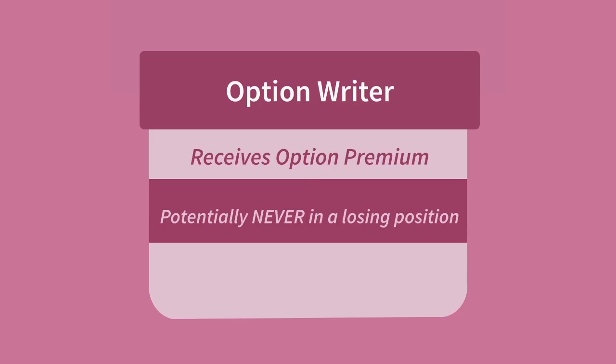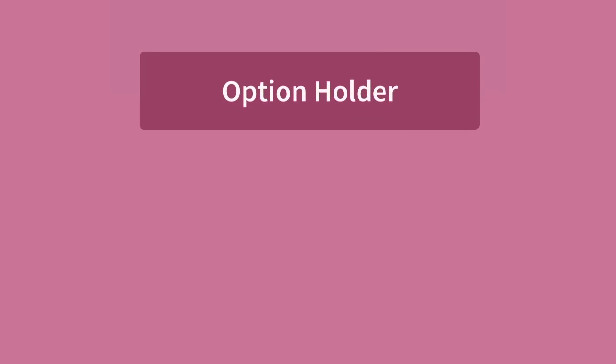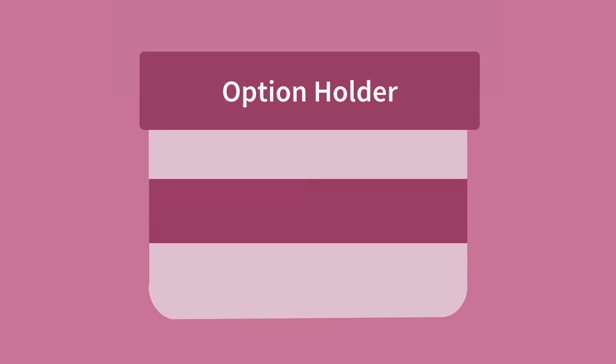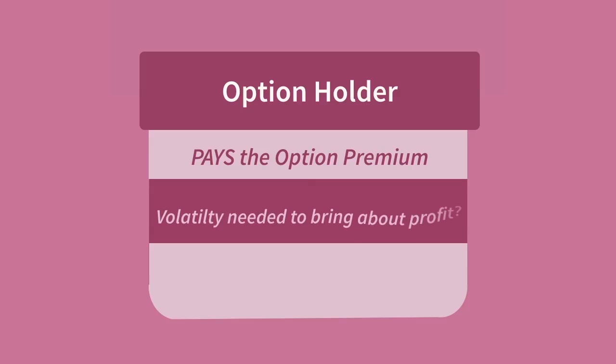Of course, in the case of writing call options, the maximum loss is potentially unlimited if the price continually rises. The possibility of a 100% loss is considerably less daunting than the possibility of having to pay out on a 2000% gain. From the perspective of the option holder, it's important to remember that before we see any profits, we have to recoup the amount of the premium. We need a very bullish stance to believe that not only will the price rise, but it will rise significantly in a potentially short space of time to cover the premium and bring in some profits.